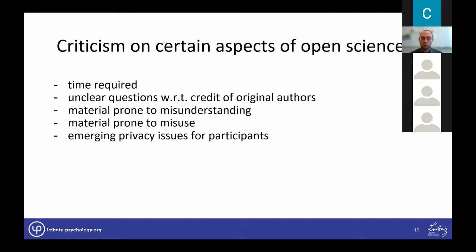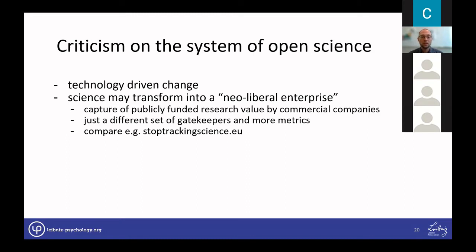Other issues include emerging privacy concerns for participants. Even with proper pseudonymization or anonymization, modern big data approaches might still allow recombination of very large datasets and re-identification of individuals. All these arguments focus on specific aspects of open science, but there is even a more fundamental criticism sometimes encountered.